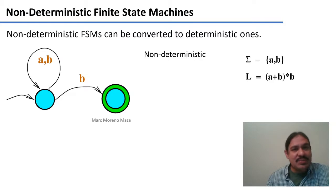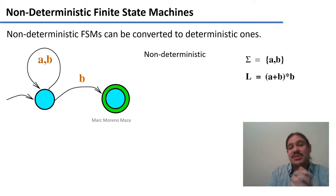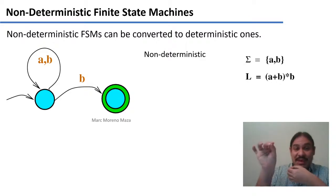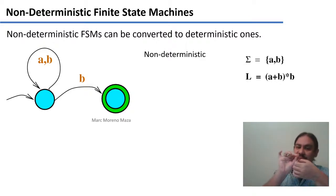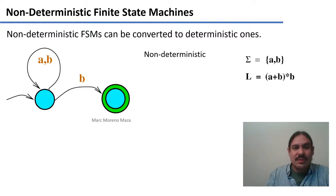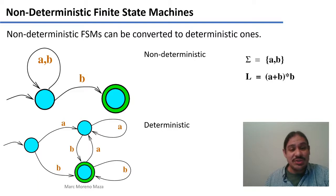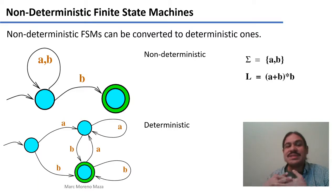As mentioned, any non-deterministic finite state machine can be converted into a deterministic one. This FSM is non-deterministic because if you're in the initial state and you get a b, two things can happen — you can go into the nth state, or cycle back where you were. This can be converted into a deterministic structure which has more states and more transitions, but they both generate the same strings — the same language.